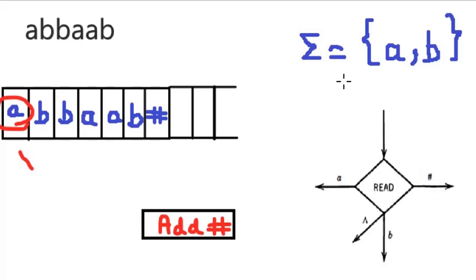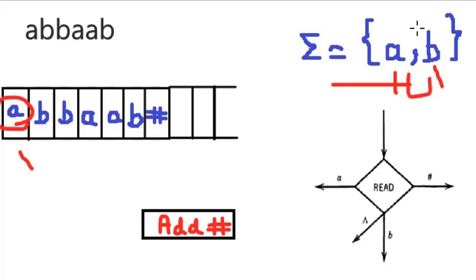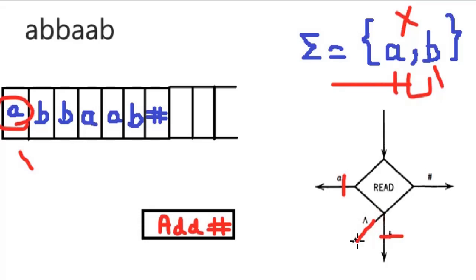For example, if sigma consists of A and B, then from a read state the possibilities are: a transition for only A, or only B, or transitions for both A and B, or transitions for neither A nor B. If neither A nor B is present, we must still move forward — otherwise the Post Machine crashes. The solution is to take a lambda (null) transition to move ahead.